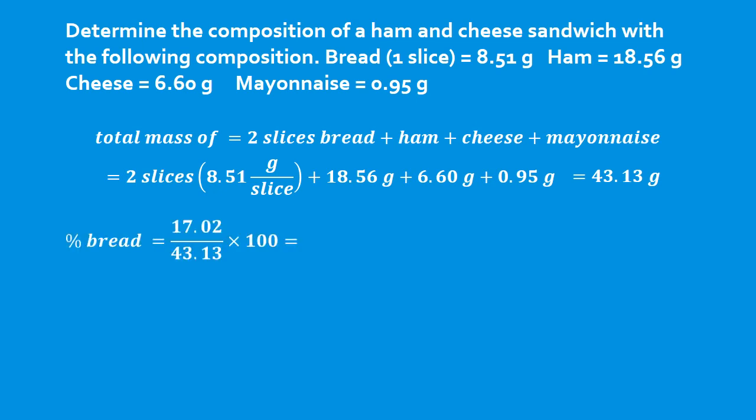To find the percent composition of the bread: the mass of the two slices combined — 17.02 — divided by the total mass, times 100, gives us 39.46%. When doing percentage calculations, you must show that you're multiplying by 100, because you cannot take 17.02 divided by 43.13 and end up with 39.46 without multiplying by 100. That is what I call impossible math. You must multiply by 100 to show it is a percentage.